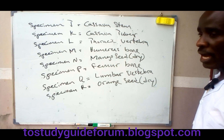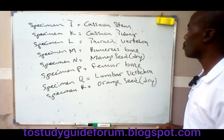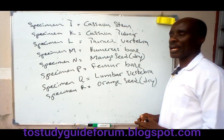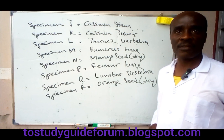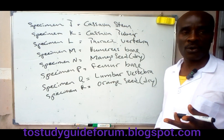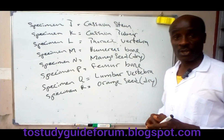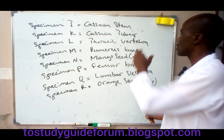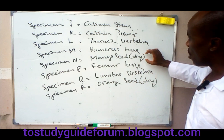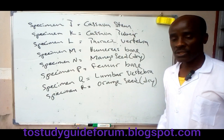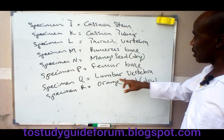Cassava tuber is a storage organ, and the onion bulb is also a storage organ used in asexual reproduction. So cassava tuber and onion happen to be similar in that regard — they are both storage organs involved in asexual reproduction. Mango seed and orange seed, however, are both products of sexual reproduction.